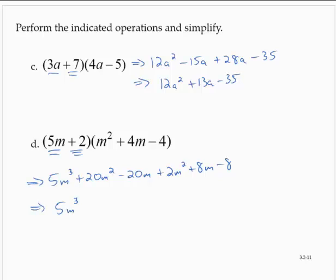I'd have 5m cubed, plus 22m squared, minus 12m, minus 8.